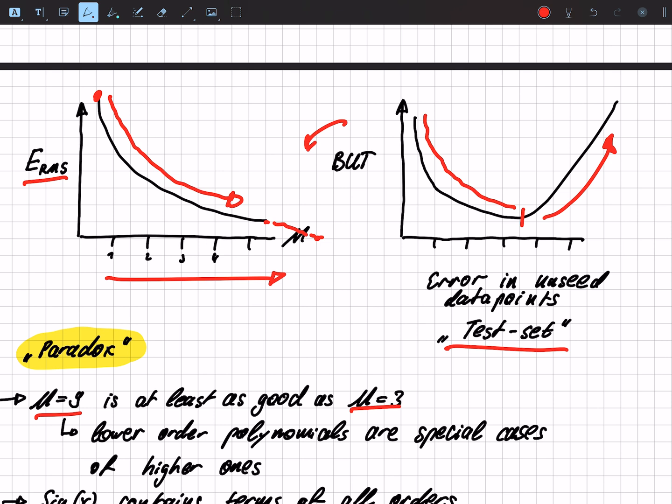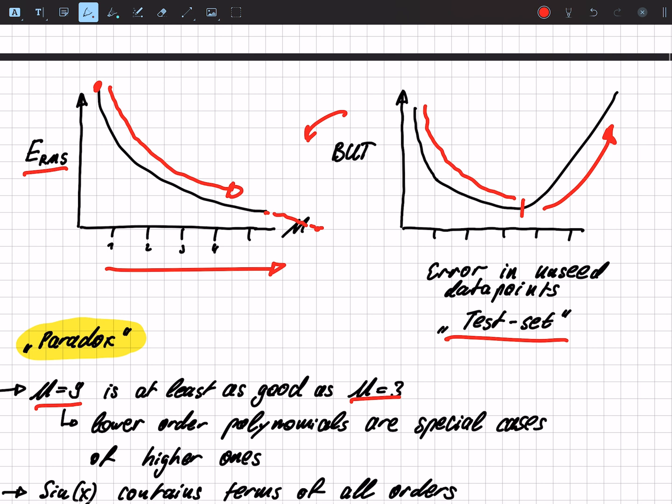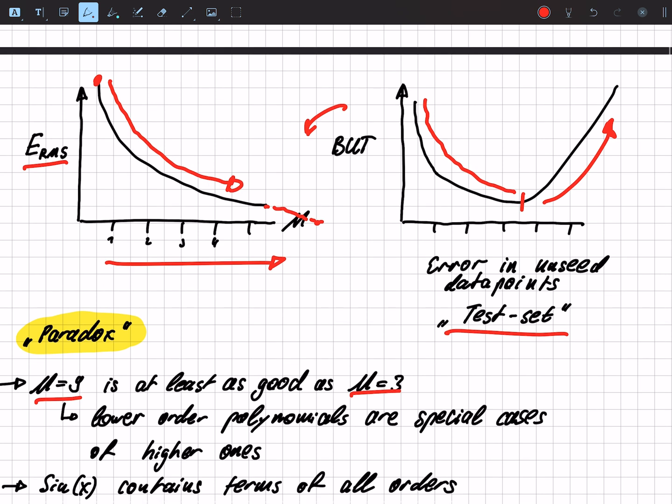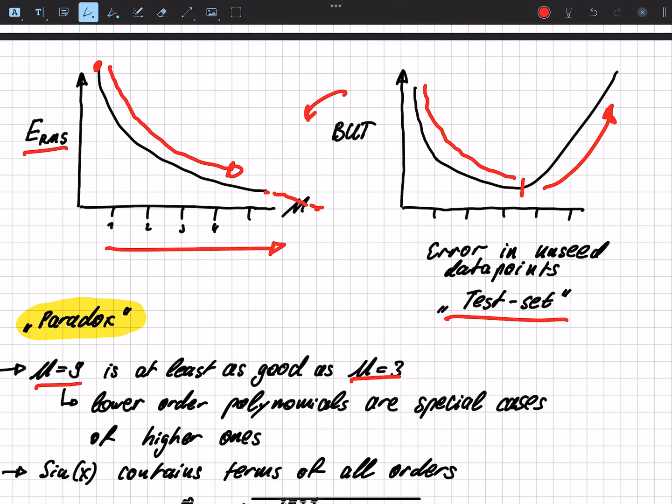Because degree 3 is just a special case of the higher polynomial. You can just set some parameters of the polynomial of degree 9 to 0 and get the polynomial of degree 3. But in our case, this doesn't work.